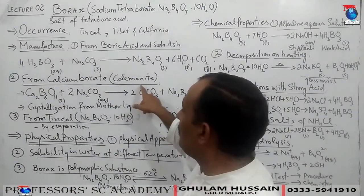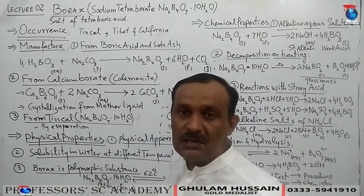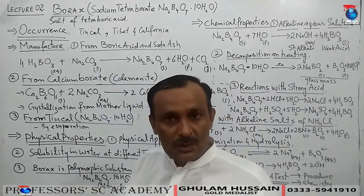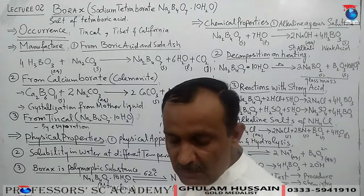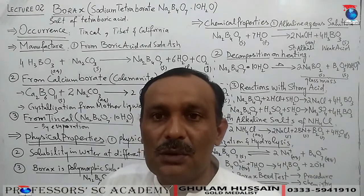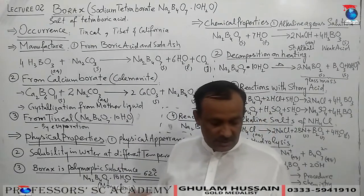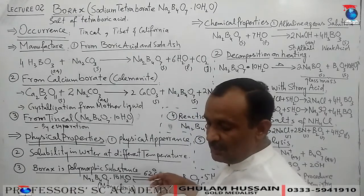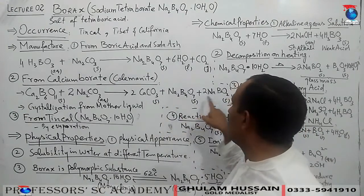Nowadays, borax is most exclusively obtained commercially from calcined Colemanite mineral. Colemanite is boiled with sodium carbonate, and as a result calcium carbonate precipitates out, and a mixture of borax and sodium metaborate (NaBO₂) is formed.